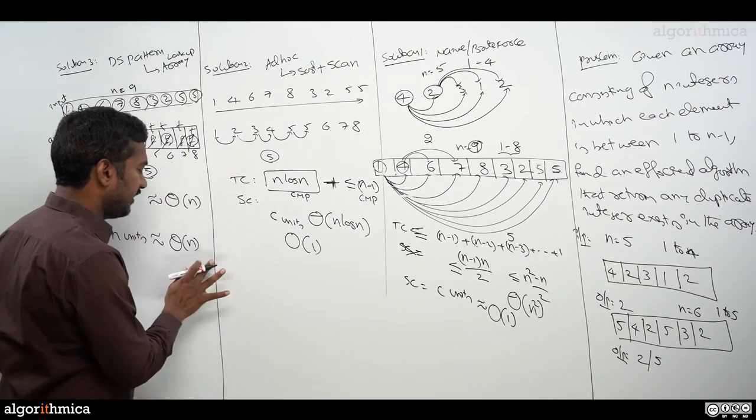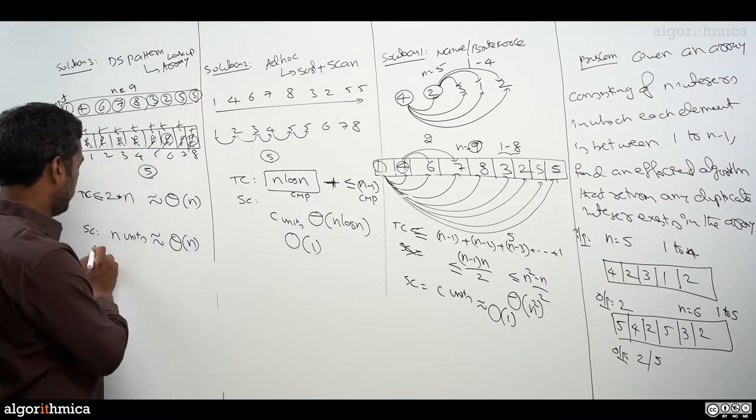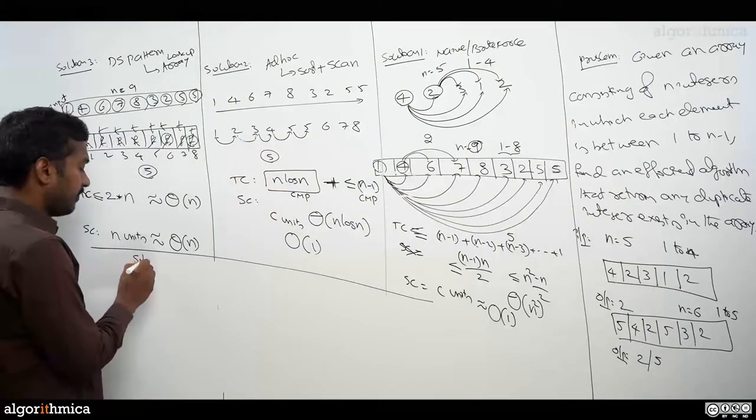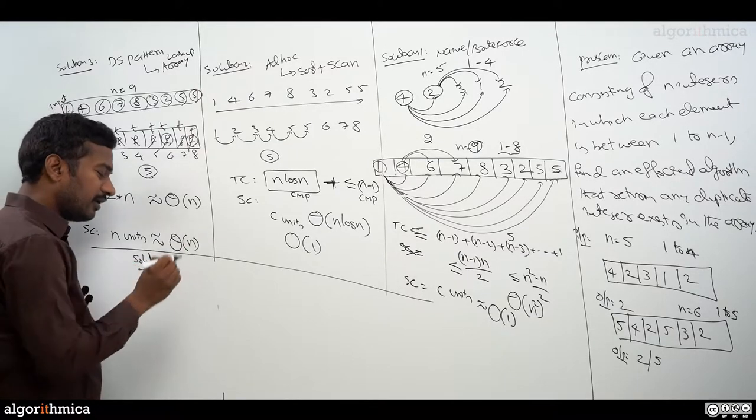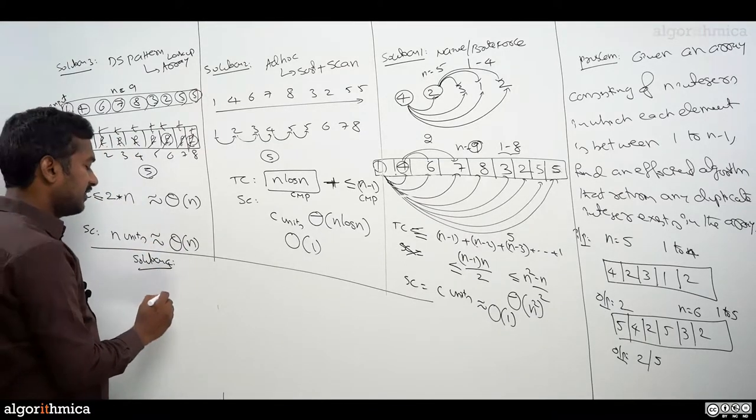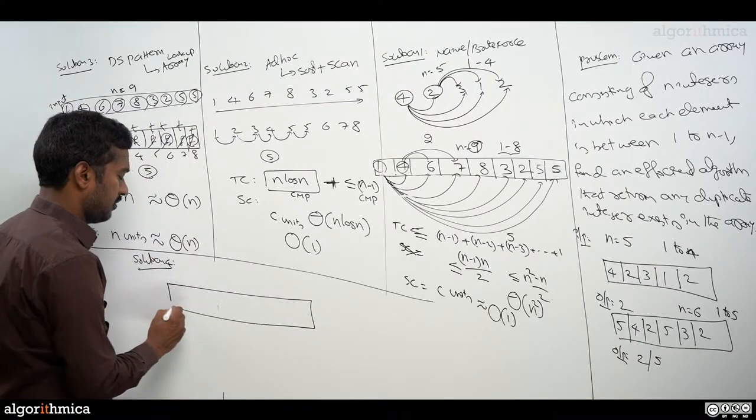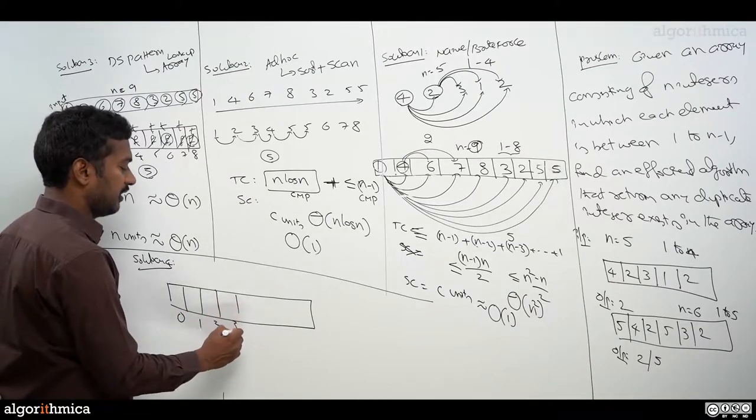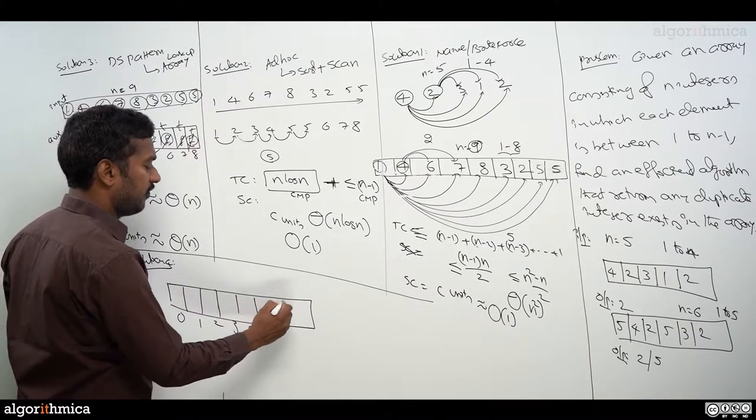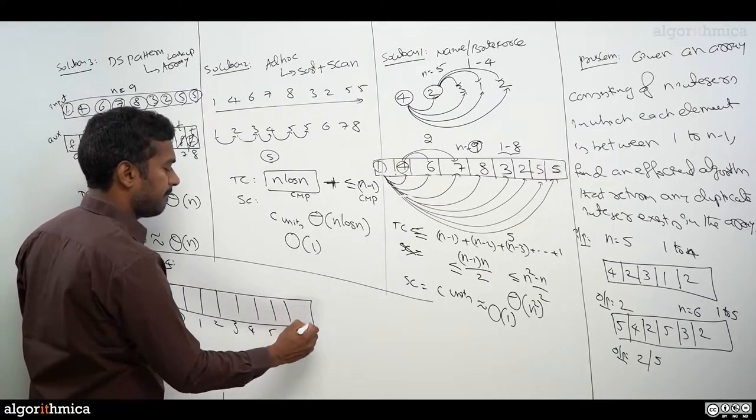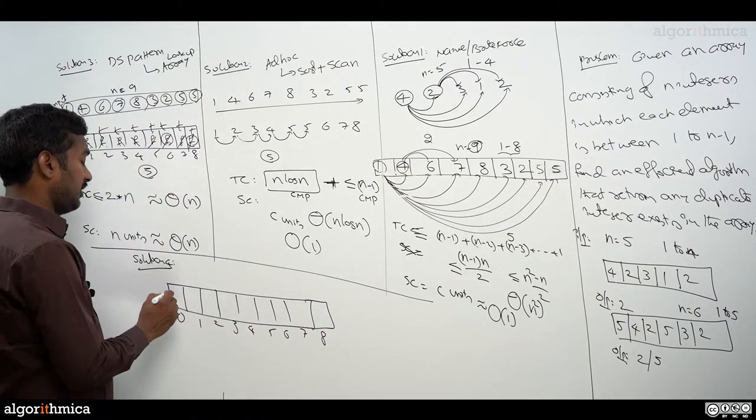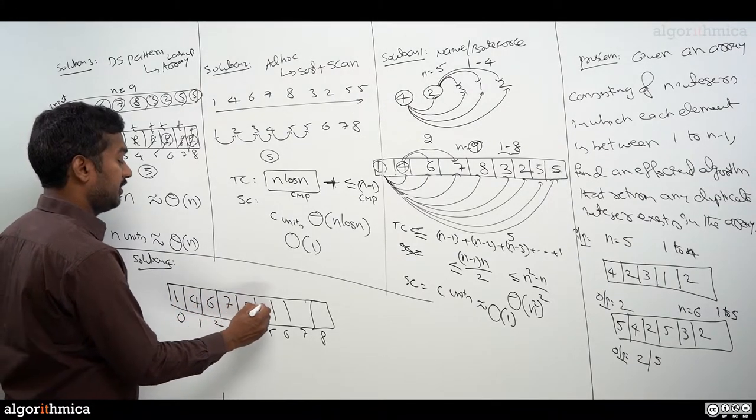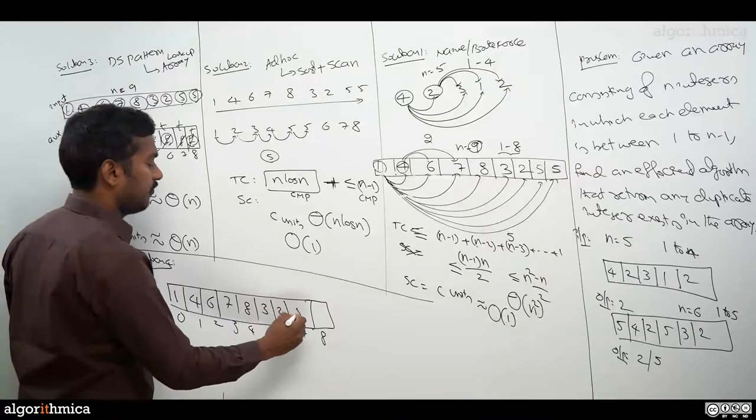Let's make a more concrete understanding of this idea. Let me just take up this idea, then we analyze it. We call this as solution number 4. Let's take this data. 0th index, first index, size is 9: indices 2, 3, 4, 5, 6, 7, and 8. The original data is 1, 4, 6, 7, 8, 3, 2, 5, 5.